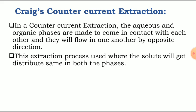This extraction process is used where the solute will get distributed equally in both the phases. The solute or sample particles distribute in organic as well as aqueous phase at a definite ratio. In Craig's counter current extraction, the solute gets distributed equally — for example, if we take 5 grams of solute, 2.5 grams will distribute into the aqueous phase and the remaining 2.5 grams into the organic phase.